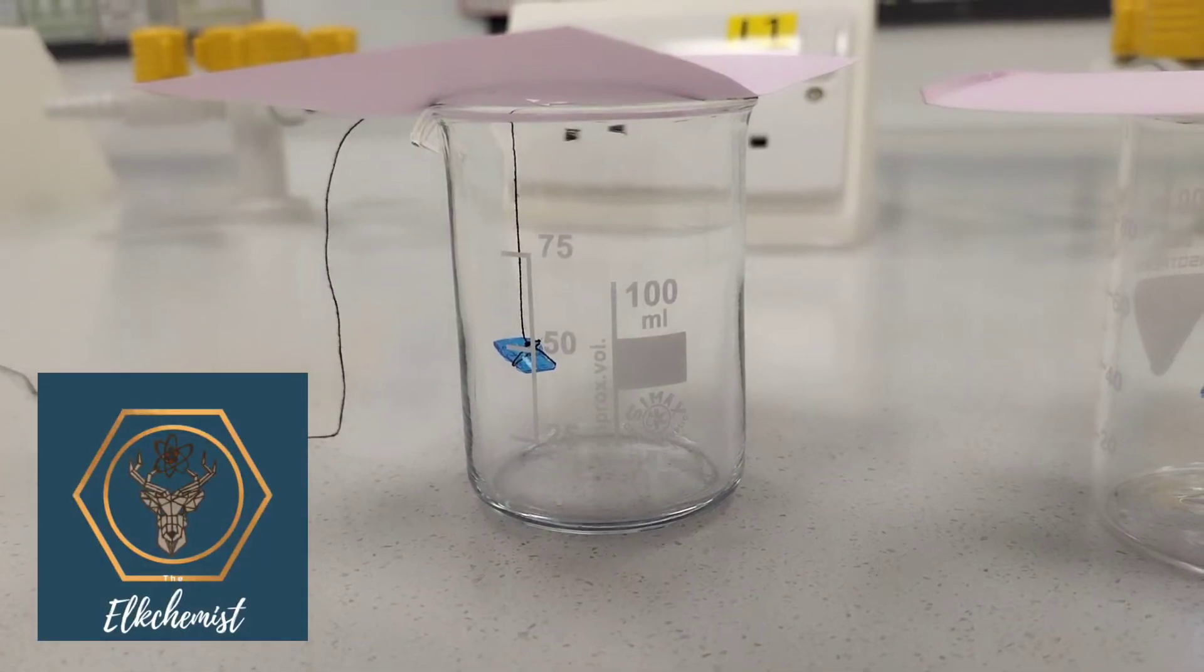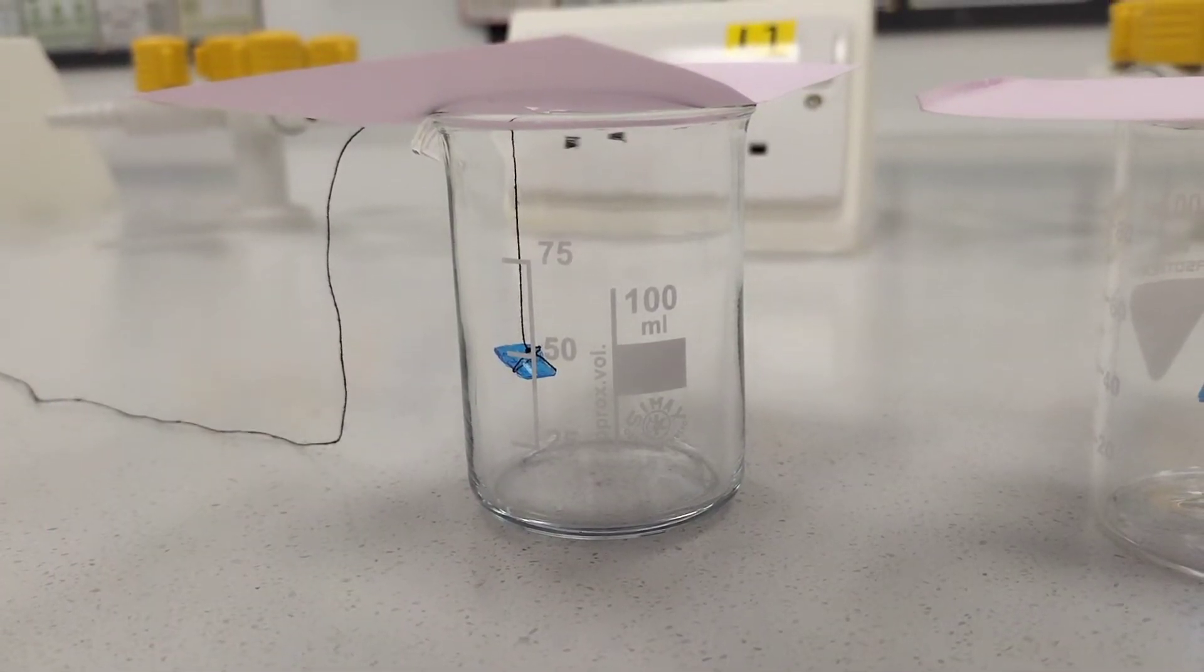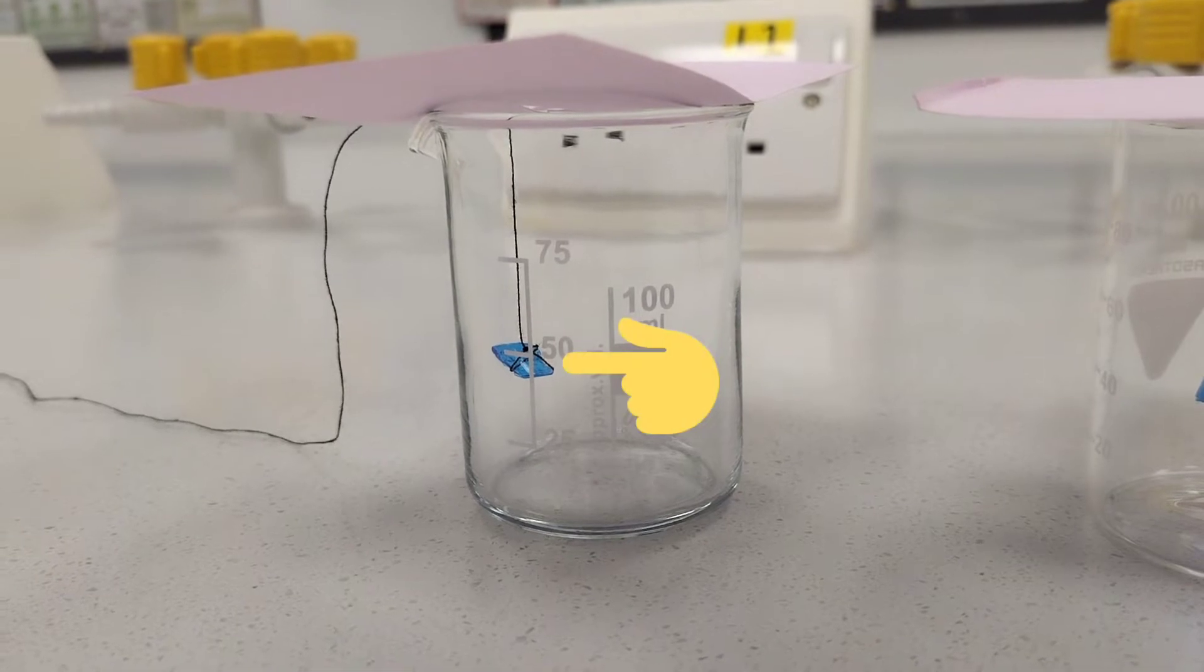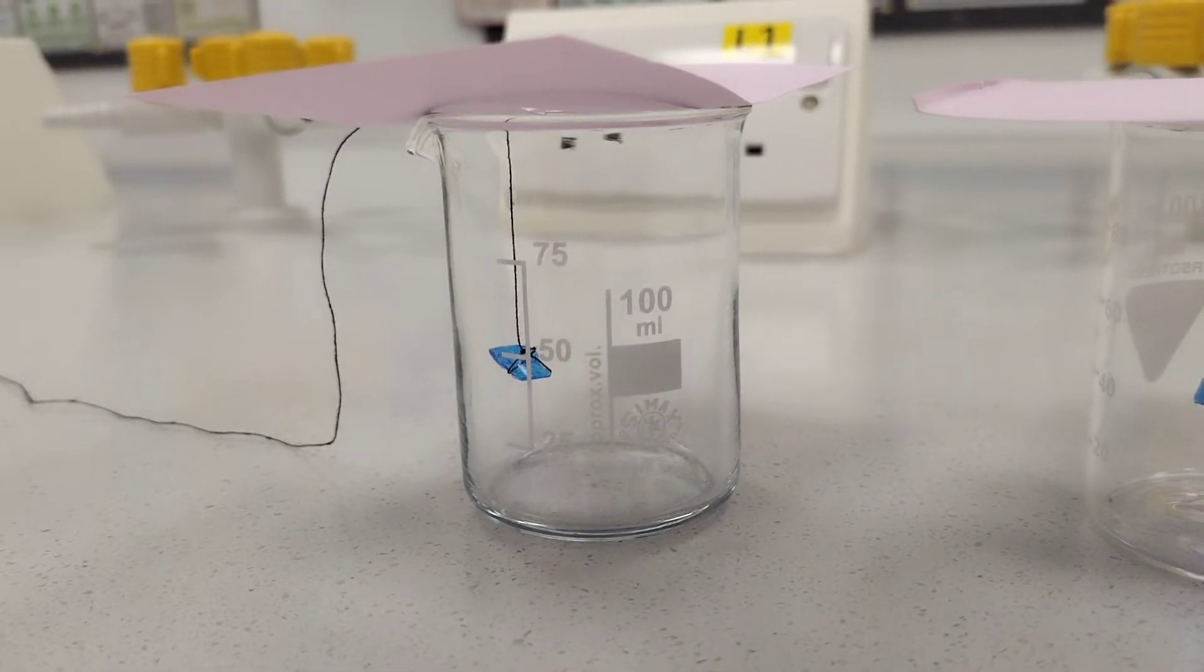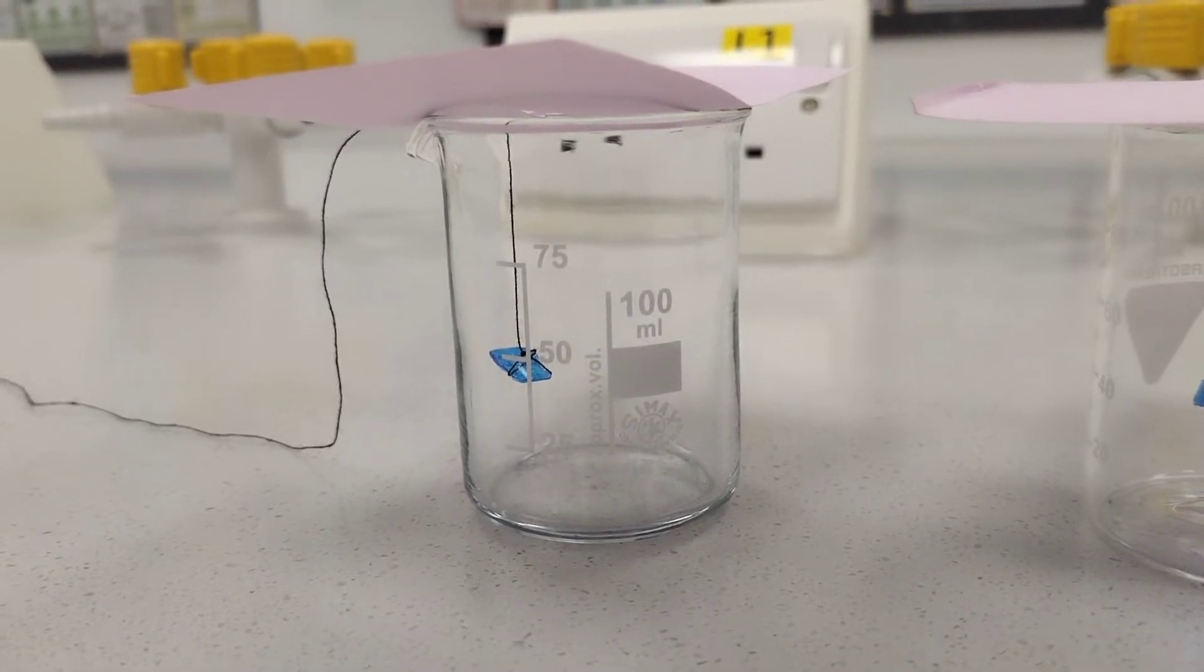Welcome to this Alchemist chemistry video. I'm going to show you how to grow a huge copper sulfate crystal. What I have here suspended in this beaker is a small seeding crystal which I'm going to use to grow my larger crystal from.